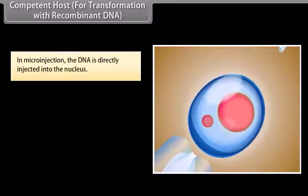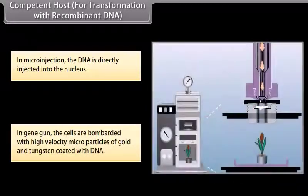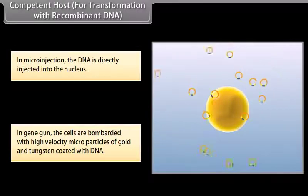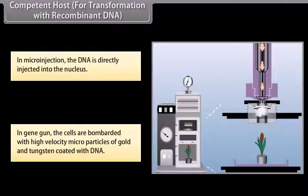introduction of alien DNA are micro-injection and biolistic or gene gun. In micro-injection, the DNA is directly injected into the nucleus and in gene gun, the cells are bombarded with high-velocity microparticles of gold and tungsten coated with DNA.